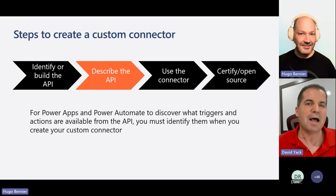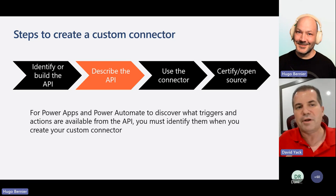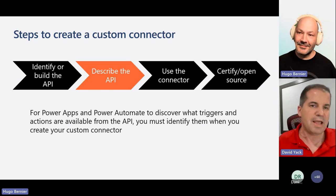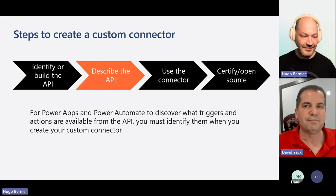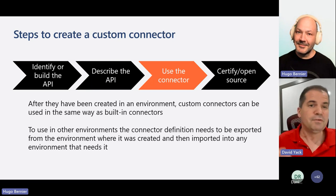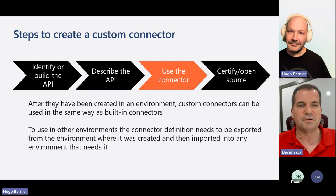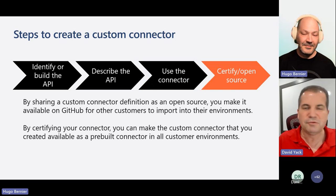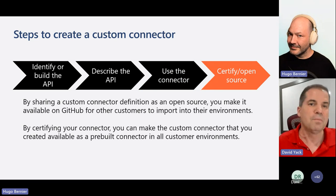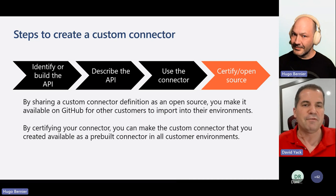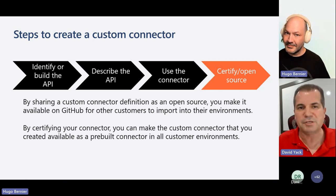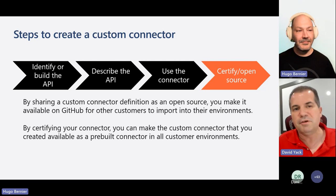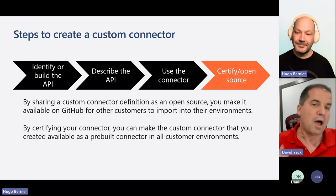Then you want to describe the API. This is how you tell the app and the flow what the connector can do. Once you've done that, you can use the connector. And if you think it's something useful to other people, you can go ahead and certify, open source, or do both. If you own the API, you can go through the certification process and publish it as a verified publisher. If you're just a community member, you can publish it as an independent publisher. Either way makes it so other people can take advantage of it.